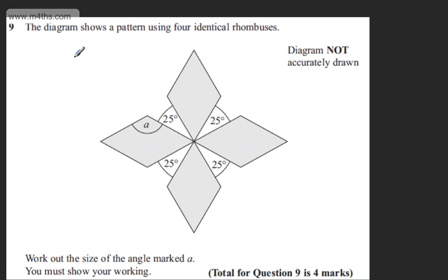This is question number nine. The diagram shows a pattern using four identical rhombuses. We're asked to work out the size of the angle marked A. You must show your working and the question is worth four marks.